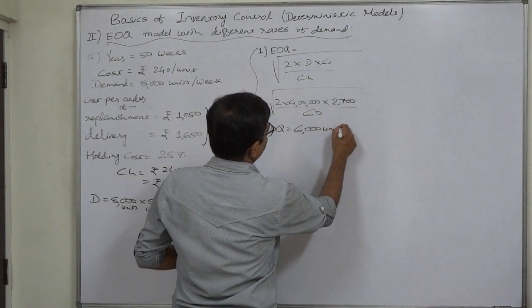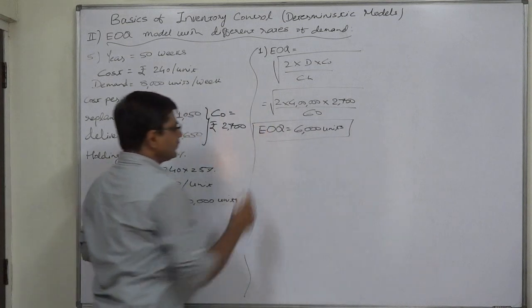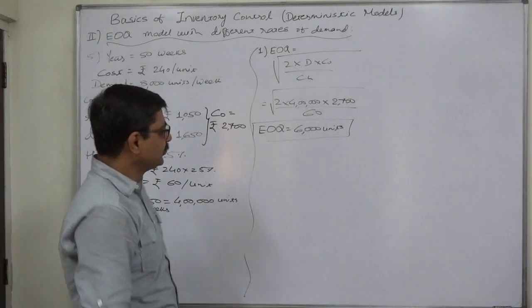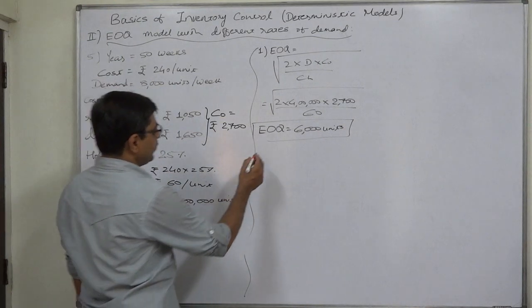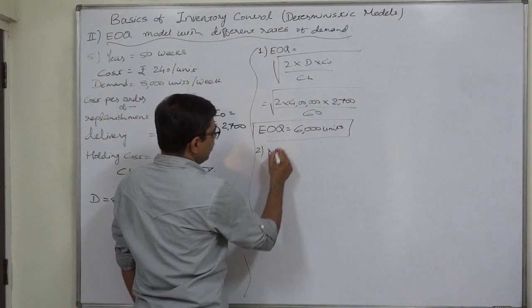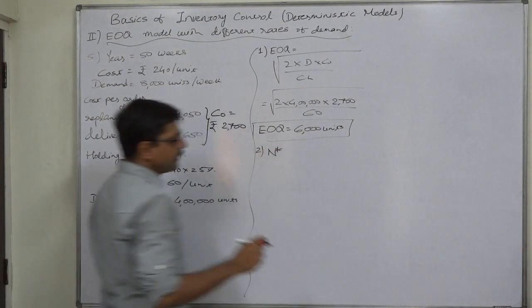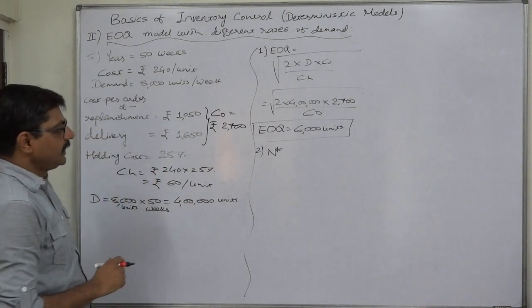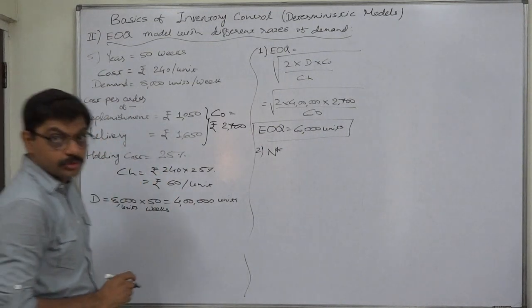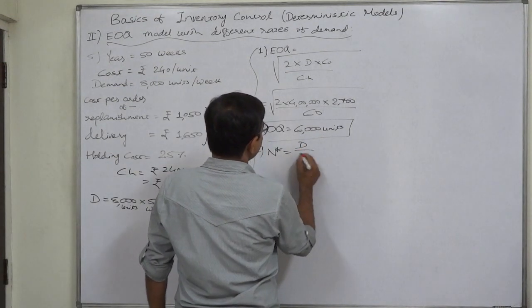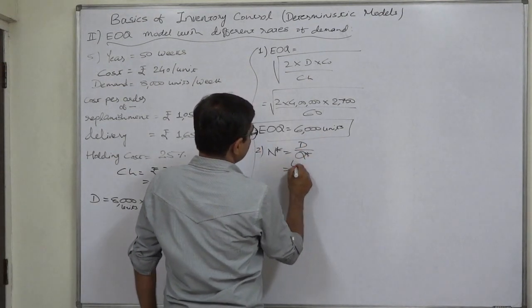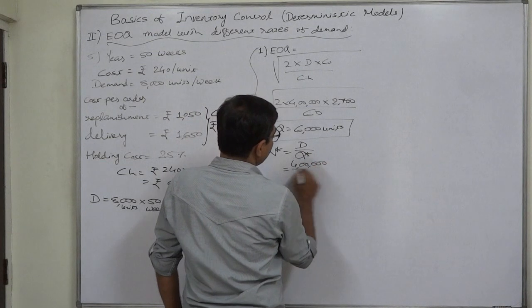Number 2, N star, number of orders or optimal number of orders per annum. If our EOQ itself is Q star or ordering quantity, that is D divided by Q star. It is 400,000 divided by 6,000, so it comes to 66.67 times in a year. We have to place order this number of times.